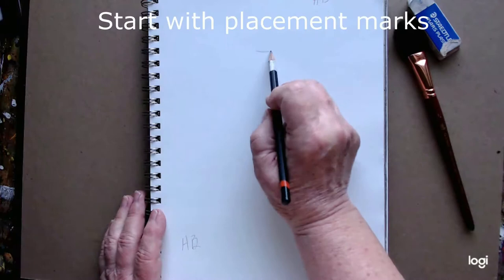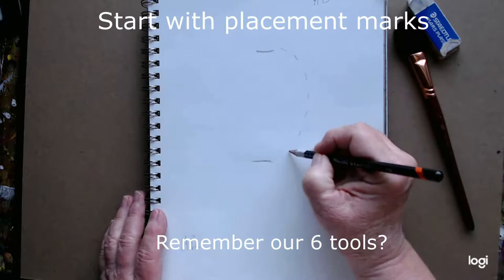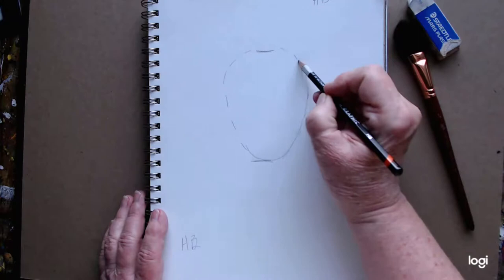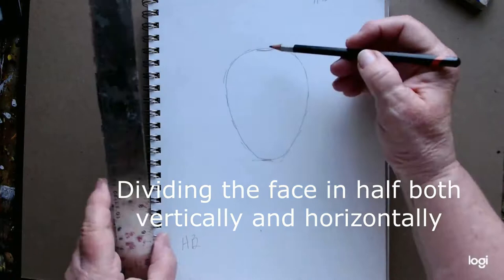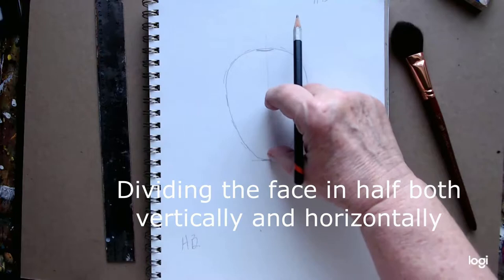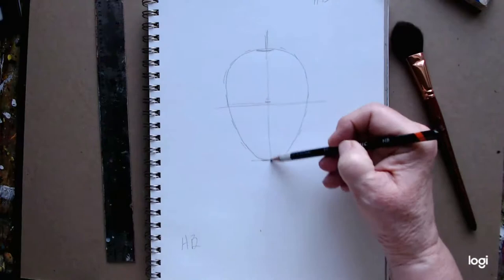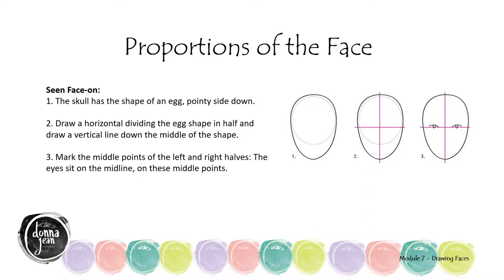I find it helpful to start with some marks that tell me where my head is going to be placed. I want the head to be wider at the top and narrower at the bottom for the chin — putting those marks in really gives me a feeling for the shape. We're going to divide our egg shape into halves both vertically and horizontally, marking the middle points on both the left and right halves. Remember that the eyes sit on that horizontal line, and I'll show you how I set that up to make sure they're placed correctly.